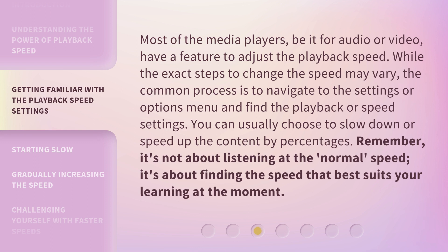Most media players, be it for audio or video, have a feature to adjust the playback speed. While the exact steps to change the speed may vary, the common process is to navigate to the settings or options menu and find the playback or speed settings. You can usually choose to slow down or speed up the content by percentages. Remember, it's not about listening at the normal speed — it's about finding the speed that best suits your learning at the moment.